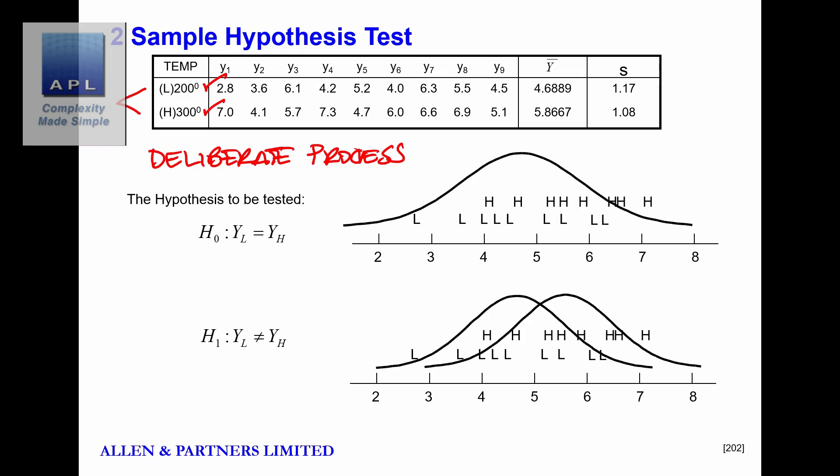In this case, some engineer has decided that maybe a low temperature might produce a different result to a high temperature. The reason we're using the t-test is because here are the two samples: here's the sample set from the high temperature, here's the sample set from the low temperature.